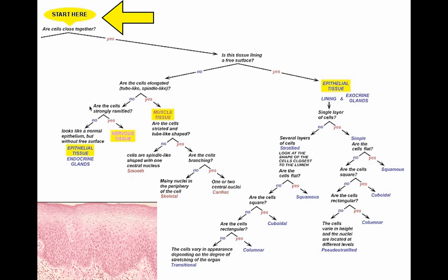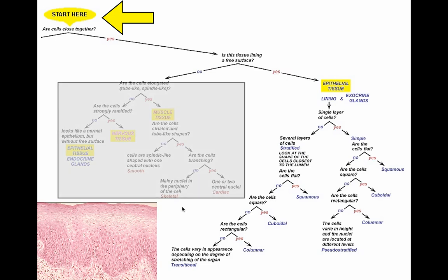The next question: Is this tissue lining a free surface, or is there a free edge? Well, there is clearly a free edge. So the answer to that question is yes. So I'm going to darken out the other side of this tree to make it more clear where we're going. It is an epithelial tissue. Now, the next question: Is it one layer or many layers of cells? Hopefully, that's not too difficult to see that there are many layers of cells. So now we move here. Now we know that it is a stratified epithelium.